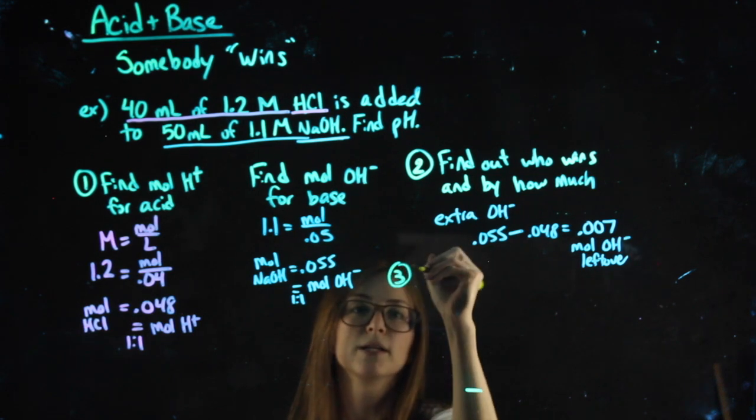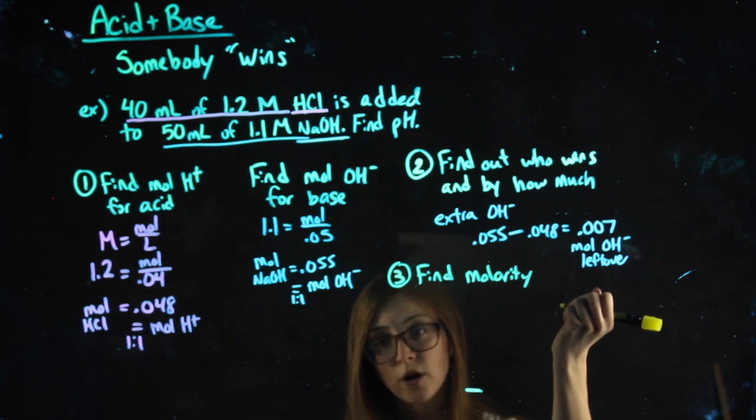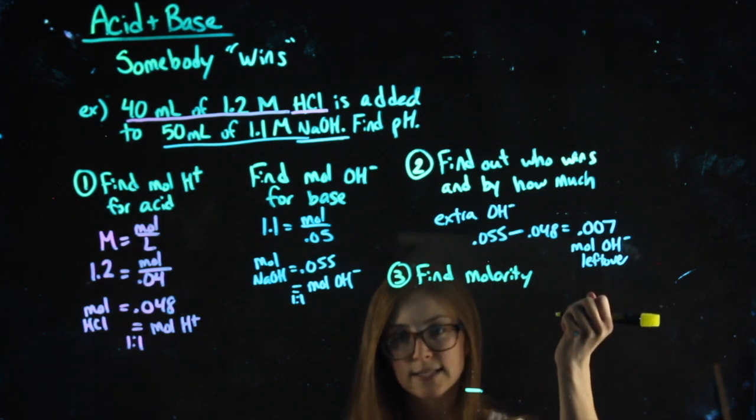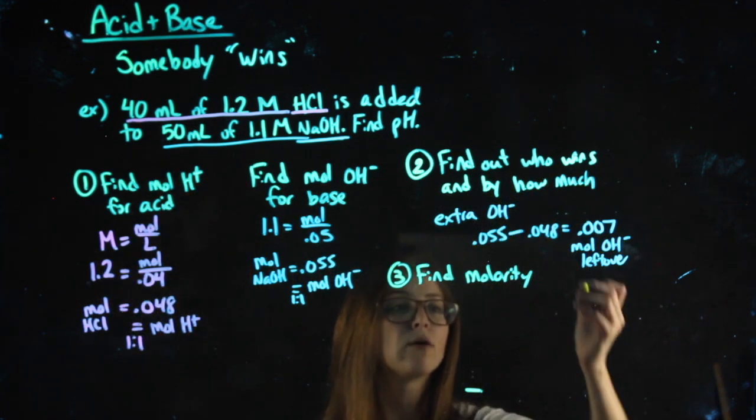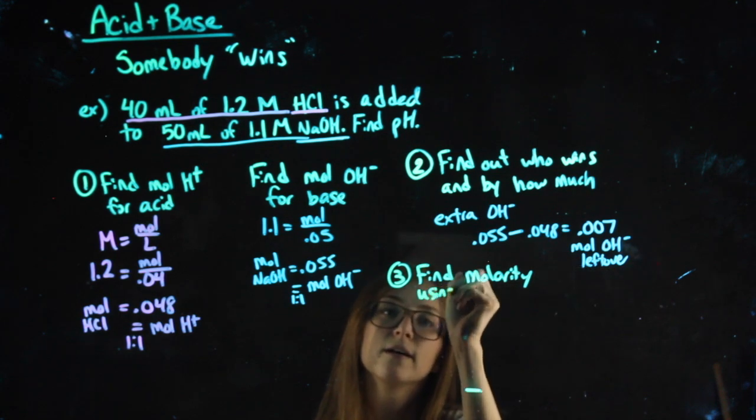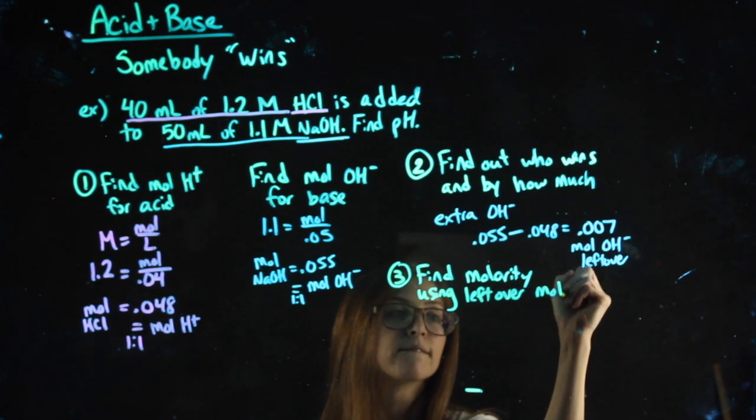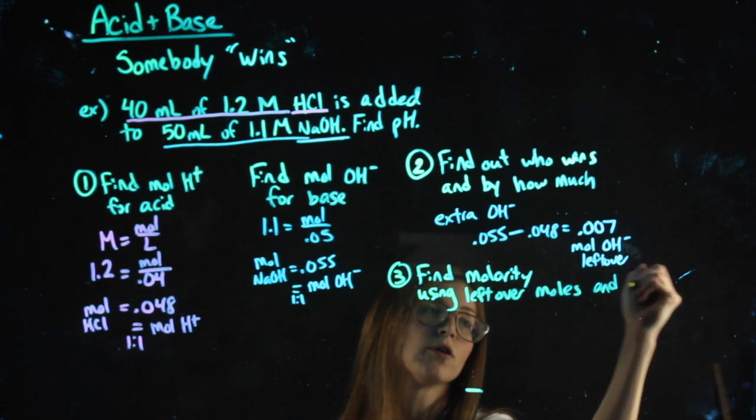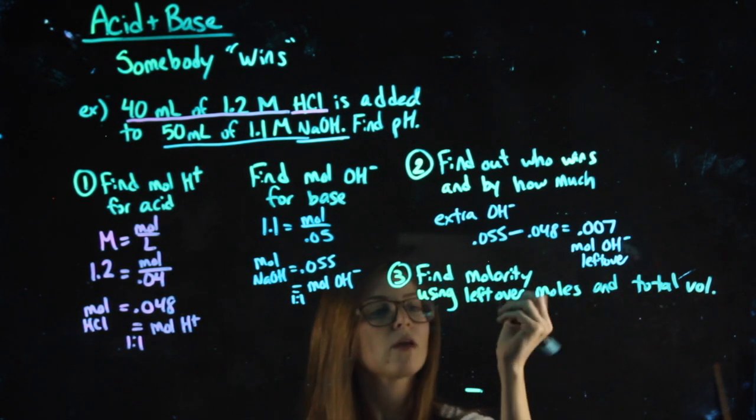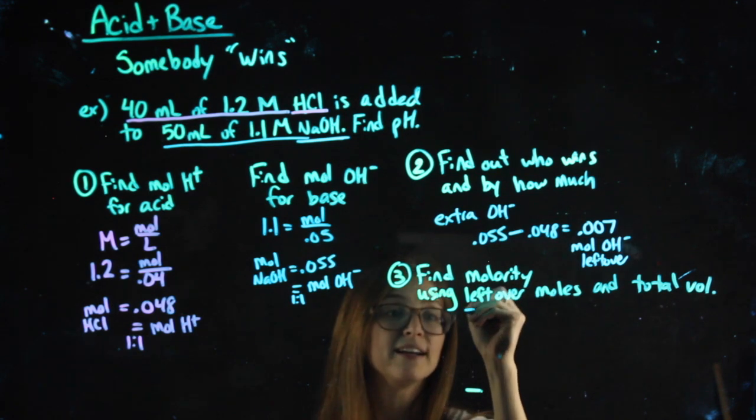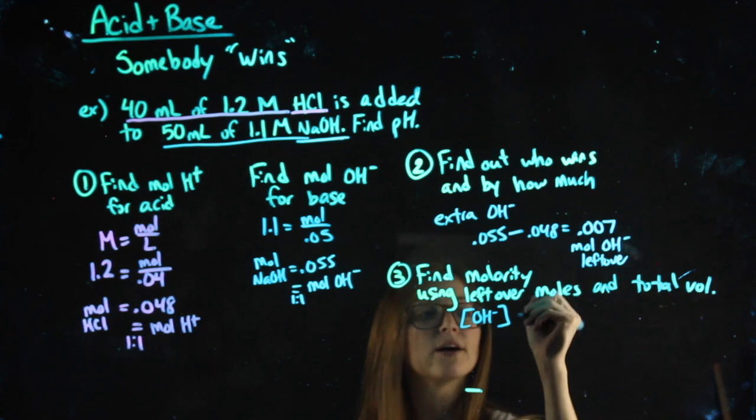I then can find molarity using total volume, just like I did in acid plus acid and base plus base problems. These two solutions have been combined together, so they have a total volume now. Find molarity using the leftover moles and total volume. In this case, the molarity that I'm finding is going to be of OH since the moles I had leftover were of OH.